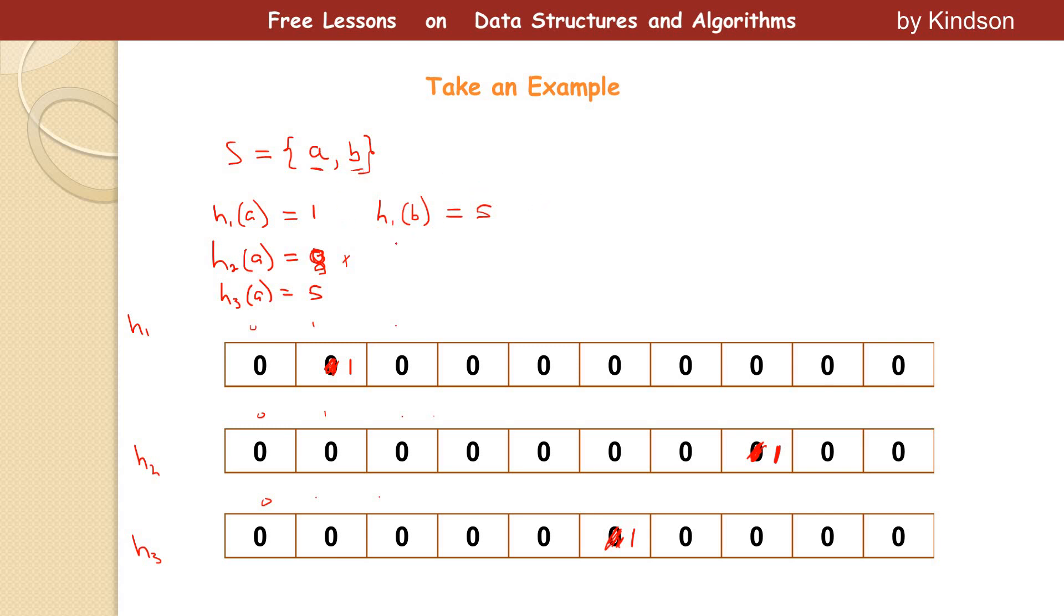So we take for the next one, H1 of B, H2 of B, and H3 of B. So in this case, let's say it's equal to five, three, six. Okay.